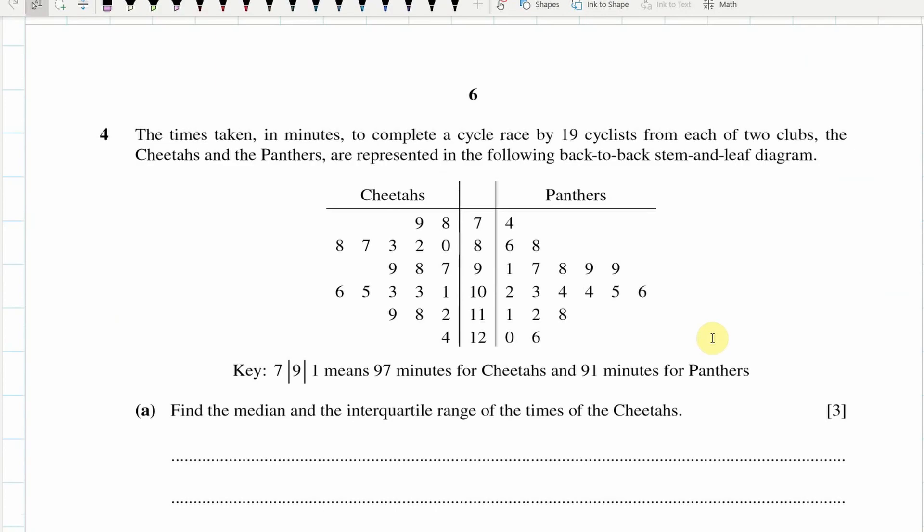Next one. Now, this is one that we really shouldn't lose marks on. Very easy question. So, median, first of all, we know that there are 19 cyclists, and we are looking for median interquartile range of the Cheetah's times. Median, there's 19, half of 19. So we are looking for the 10th value. 19 divided by 2 is 9.5, so you round up, so you're looking for your 10th value. So count up from the bottom, 1, 2, 3, 4, 5, 6, 7, 8, 9, 10. So this is our median. Median equals 99 minutes.